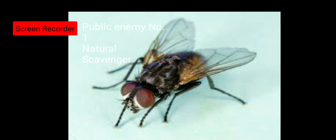Now two terms are used for housefly. The first is that housefly is known as public enemy number one. Why is it known as public enemy number one? Because it helps in the spreading of diseases. Since this housefly spreads various types of infectious diseases, that is why it is known as public enemy number one. The diseases spread by housefly include cholera, dysentery, typhoid, and many more.